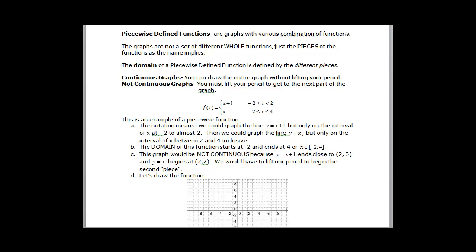We also have to talk about continuous and not continuous when we talk about piecewise defined functions. A continuous graph would be like when you draw a line and your pencil stays on the graph the whole time, from arrow to arrow, or from endpoint to endpoint. But when you have pieces, sometimes you're going to have to lift your pencil to get to another part of the graph, so that gives you a not continuous graph.